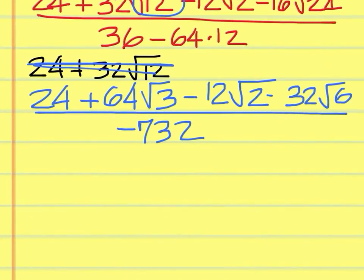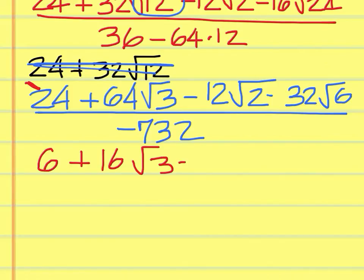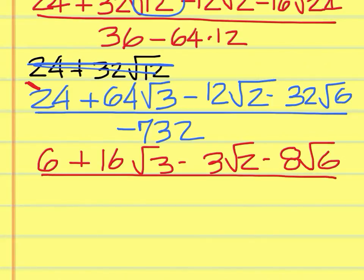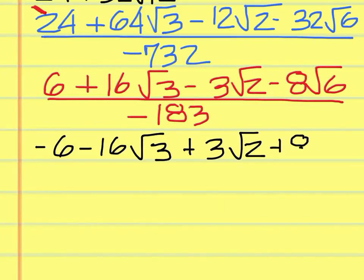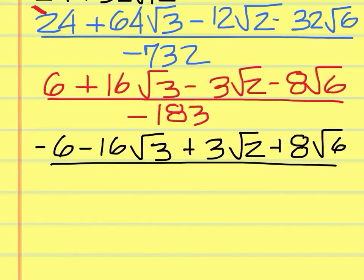It looks like we can take something out of each of these — what number comes out of 24, 64, 12, 32, and 732? We'll try 4. Taking 4 out gives 6, plus 16 square root of 3 minus 3 square root of 2 minus 8 square root of 6, and on the bottom 732 divided by 4 is 183. And then lastly, you're going to have to change the sign of everything: negative 6 minus 16 square root of 3 plus 3 square root of 2 plus 8 square root of 6 over 183.